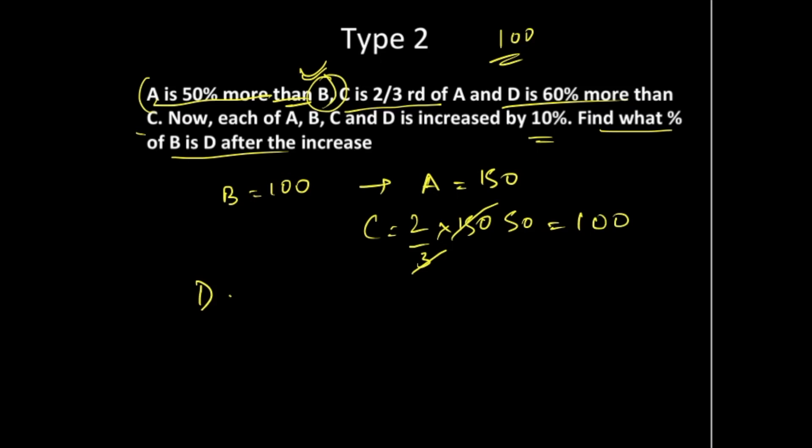D is 60% more than C. So 60% of C plus C gives you 60% more than C. There's one more concept here: if D is 60% more than C, instead of writing this equation, you can directly add 160 percent, that is 1.6 times C. This saves one step because you're finding 60% of C and adding it to the original C.